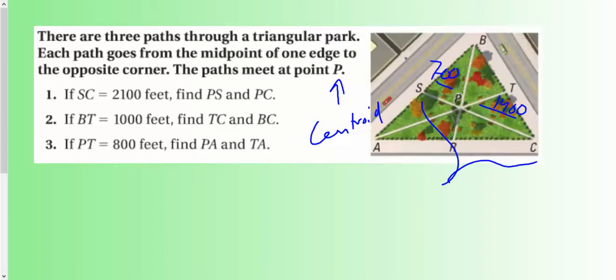BT is 1,000. So this is 1,000. And they want to know TC and BC. Well, this is the midpoint here. So this is going to be 1,000 over here as well, since those two are the same because it's the midpoint. So we're going to have 1,000. And then the entire thing is 2,000, of course.